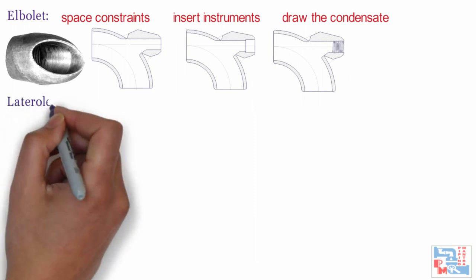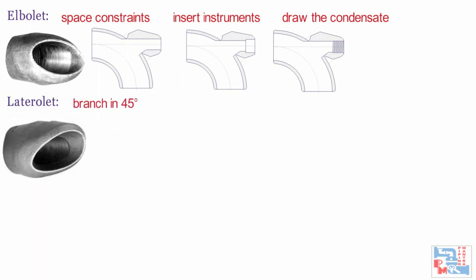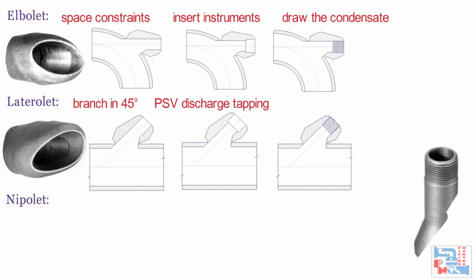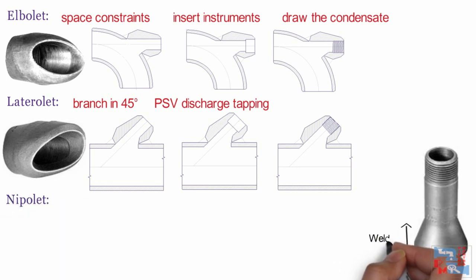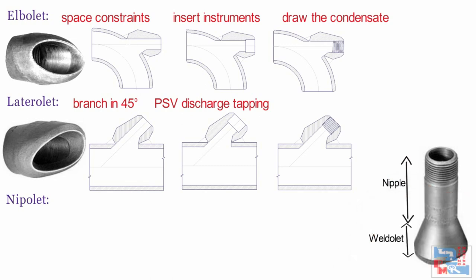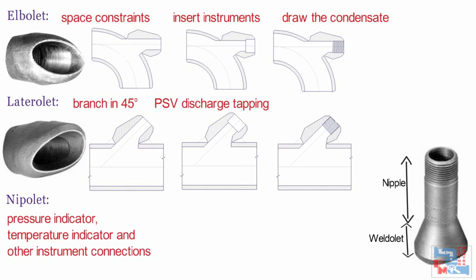Lateralette is used to have a 45-degree branch connection, as commonly seen in flare lines where PSV discharge tapping is connected at 45 degrees. It is also available in socket end and threaded end. Nippolet is similar to a threadolet but has a combination of weldolet and nipple with external thread — only fittings can be connected on the branch side, not pipes. It is used for pressure indicator, temperature indicator, and other instrument connections.